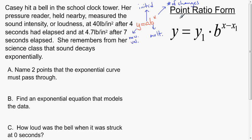Now when we move to point ratio form, which is given by y equals y₁ times b to the x minus x₁, it looks a little different. One thing that looks similar though is the fact that they both have b, the multiplier, written into them.